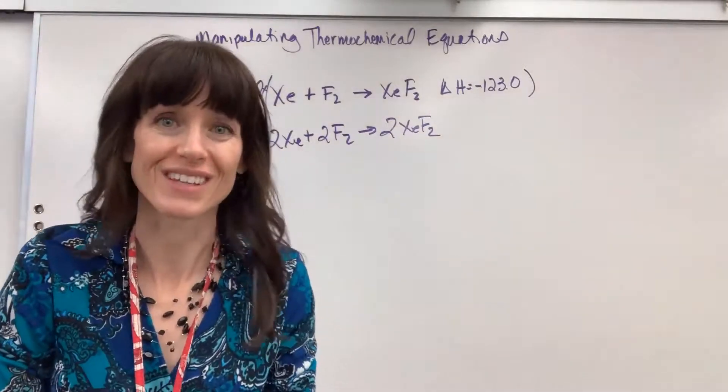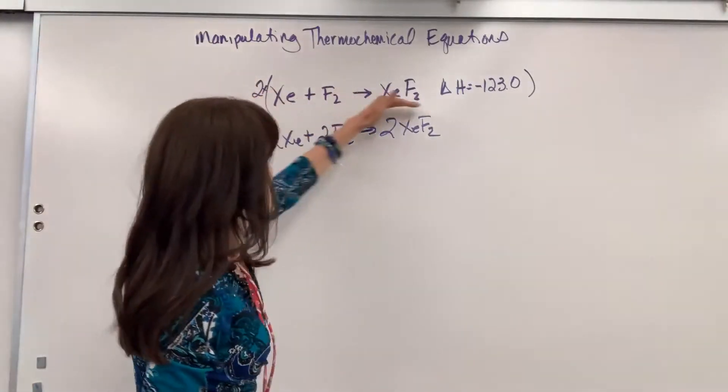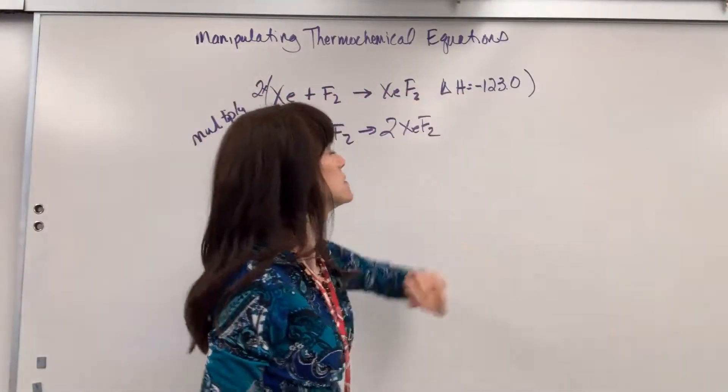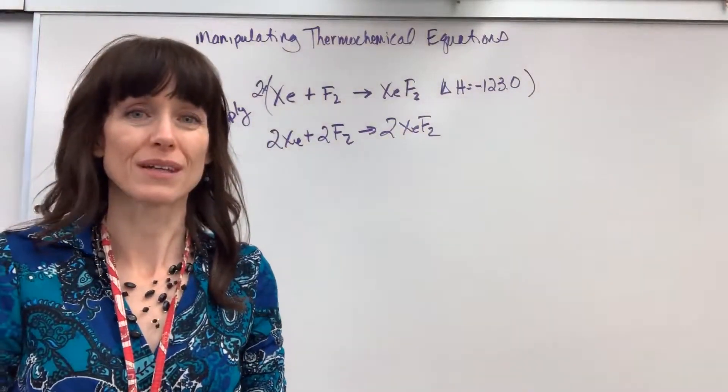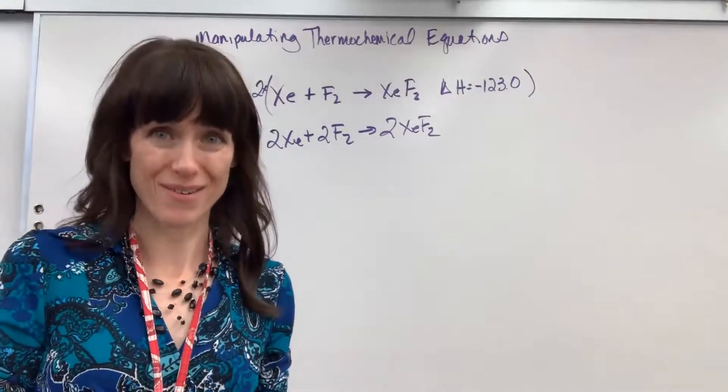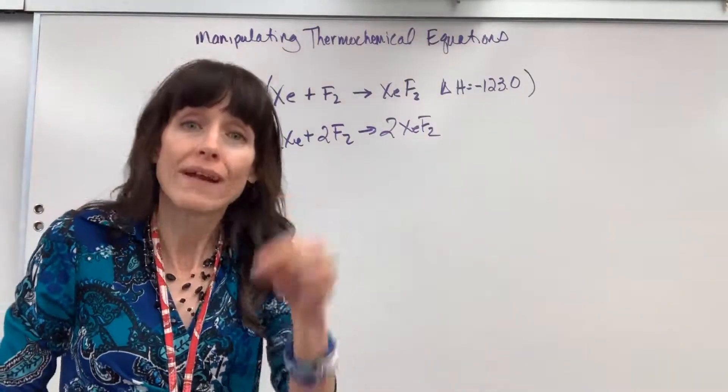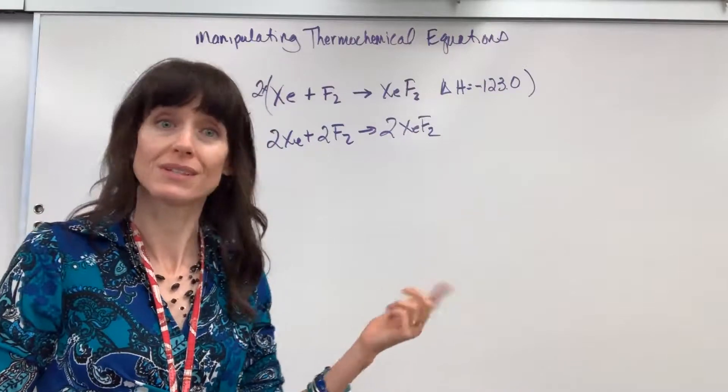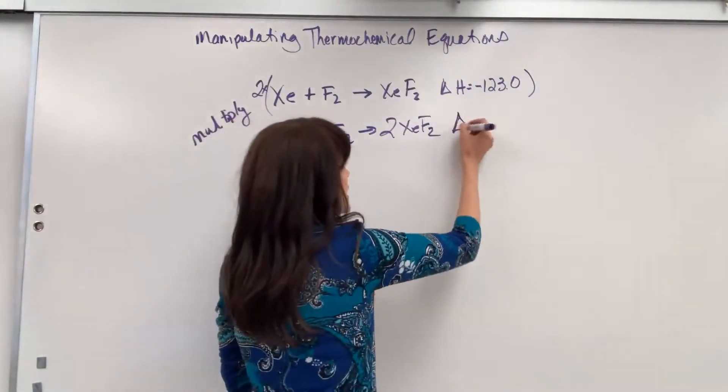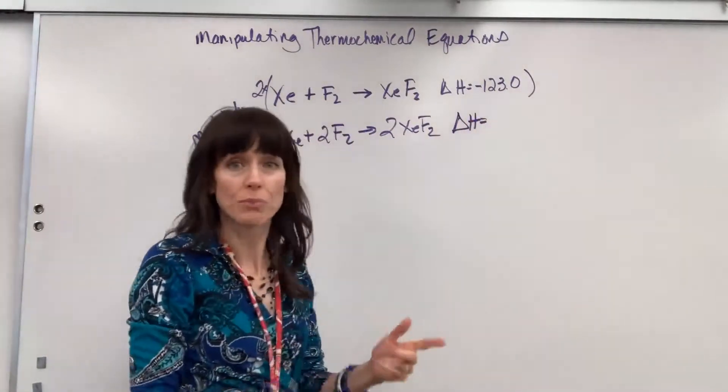Now conservation of energy. When I have this as written, one mole releases 123 kilojoules. If I double the amount, double the energy will be released. So here's your big takeaway: whatever you do to the equation, you do to the delta H. So the delta H is also multiplied by two.